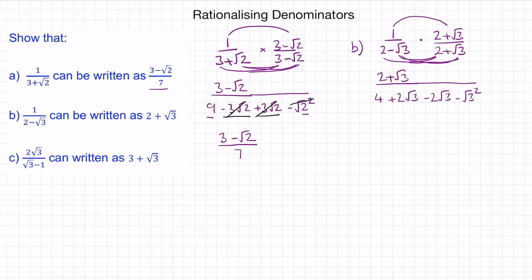We can tighten this up. The positive 2 root 3 will cancel with the negative 2 root 3. And the square root and the square will also cancel. So this becomes 2 plus root 3 over 4 take away 3, which is 1. So the answer is 2 plus root 3.